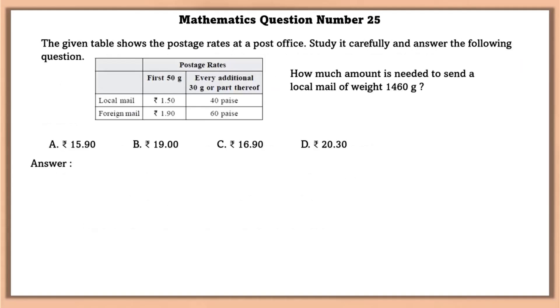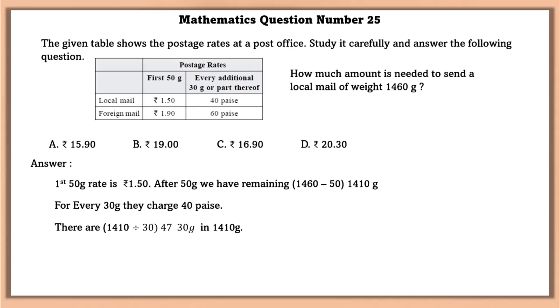Mathematics question number 25. The given table shows the postal rates at a postal office. Study it carefully and answer the following questions. How much amount is needed to send a local mail of weight 1,460 grams? First 50 gram rate is 1.50. After 50 gram, we have remaining 1,410 gram. So for every 30 gram, they charge 40 pies. There are 47 30 grams in 1,410. Therefore, postal rates for 1,410 grams is equal to 18.80. So total postal rate is equal to 20.3.